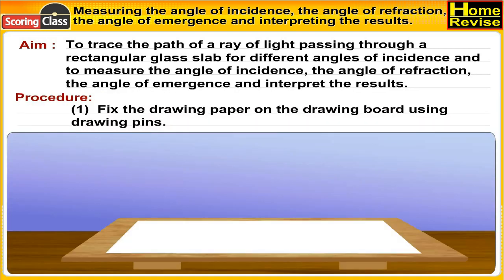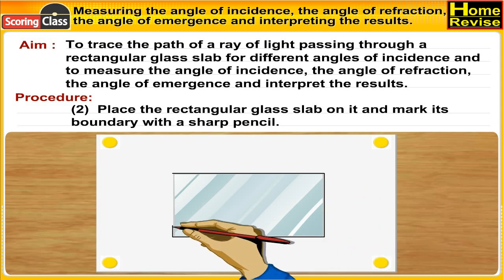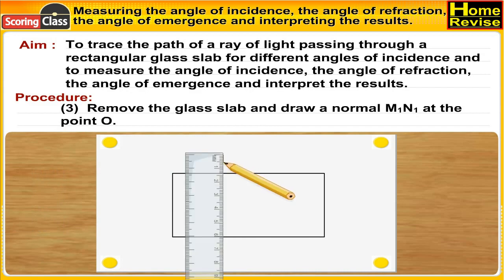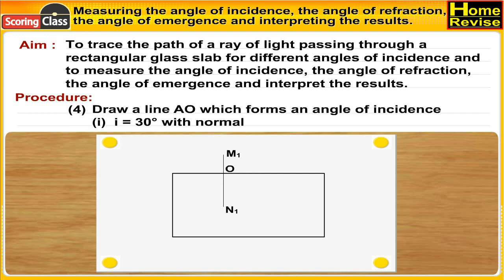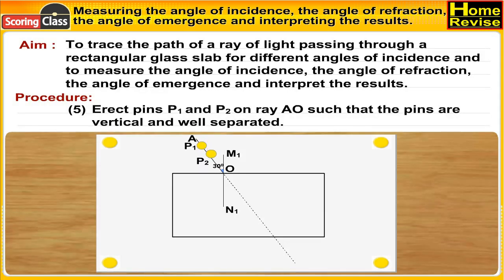Procedure: Fix the drawing paper on the drawing board using drawing pins. Place the rectangular glass slab on it and mark its boundary with a sharp pencil. Remove the glass slab and draw normal M1N1 at the point O. Draw a line AO which forms an angle of incidence I of 30 degrees with normal M1N1. Erect pins P1 and P2 on ray AO such that the pins are vertical and well separated.